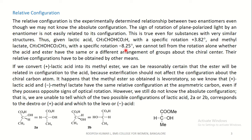If we convert plus lactic acid into its methyl ester by methylation, we can be reasonably certain that the ester will be related in configuration to the acid, because esterification should not affect the configuration about the chiral carbon atom — that is, the reaction should not affect the chiral center. It happens that the methyl ester so obtained is levorotatory.